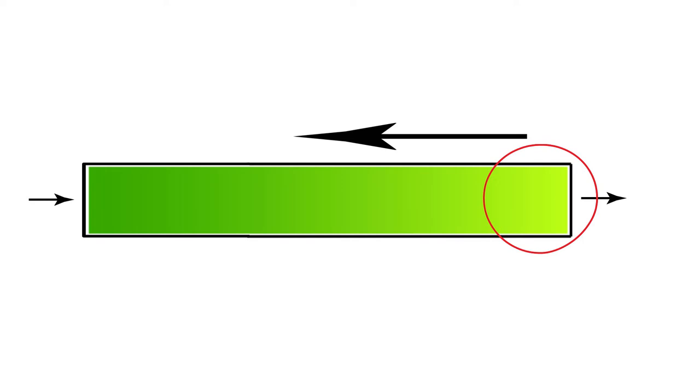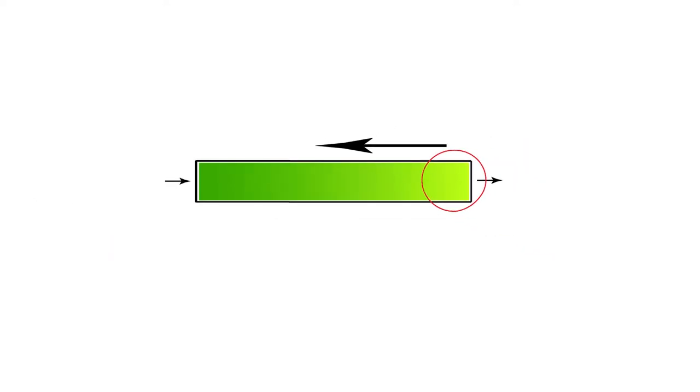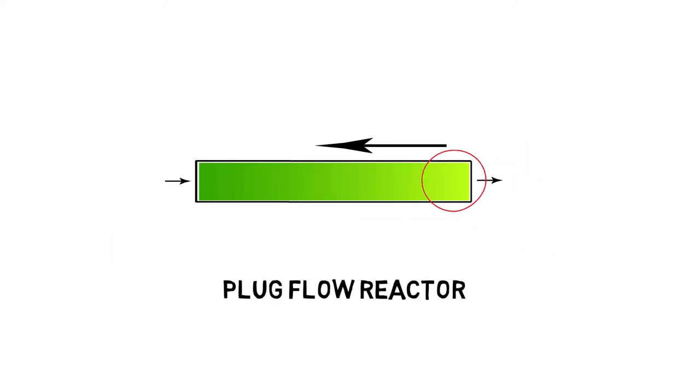This was how the tubular reactor was invented. The corresponding ideal reactor is generally called a plug flow reactor. So what is the explanation?